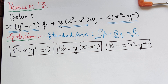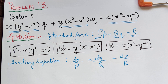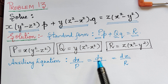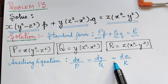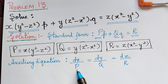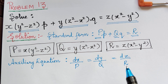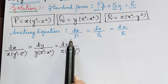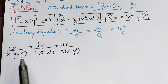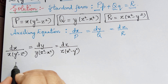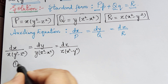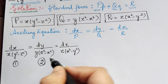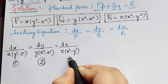Now we shall write the auxiliary equation. The auxiliary equation is given by dx/P = dy/Q = dz/R. We substitute the values of P, Q, and R. Now let us mark the first ratio as 1, the second ratio as 2, and the third ratio as 3.